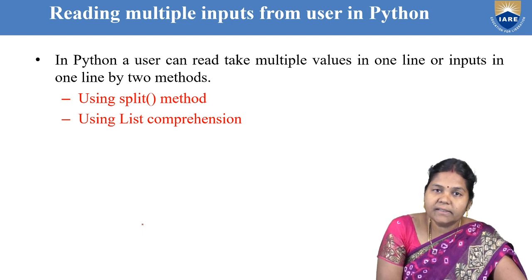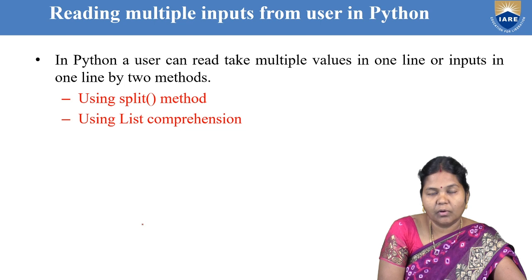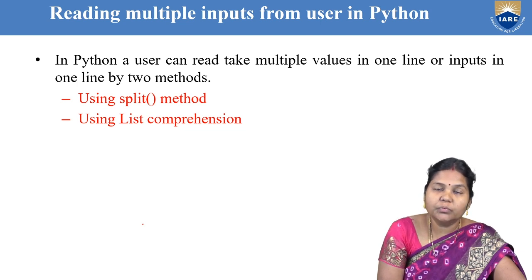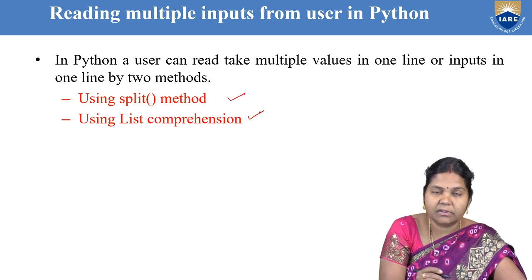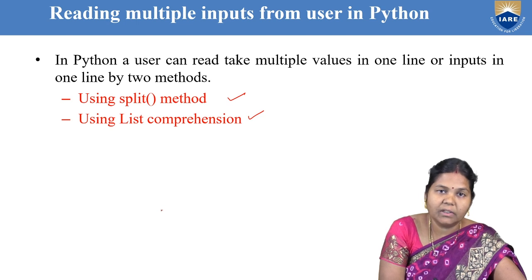To read multiple lines of input or multiple values from the console, there are two ways: using the split method and using list comprehension. These are the two ways to read multiple values from the console.